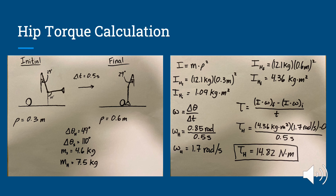To solve this, we first calculated inertia, which is mass times radius of gyration squared: 12.1 kilograms times 0.3 meters squared, done for both initial and final states. Then we solved for angular velocity — the change in angle over change in time — converting the angle to 0.85 radians, giving an angular velocity of 1.7 radians per second. Finally, for torque, we calculated inertia times final angular velocity minus inertia times initial angular velocity, divided by time, and got 14.82 newton meters.